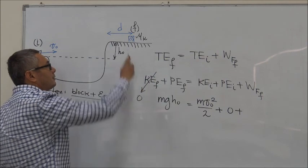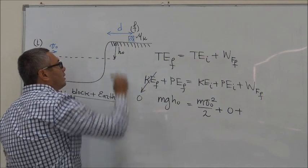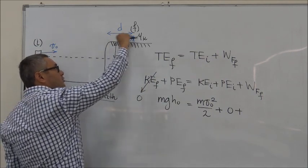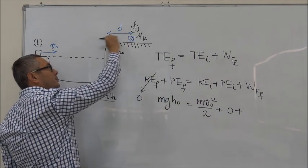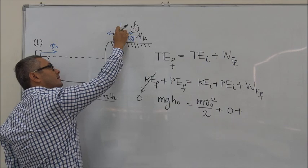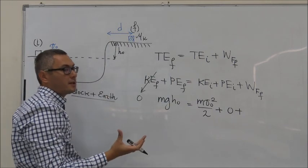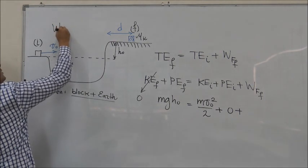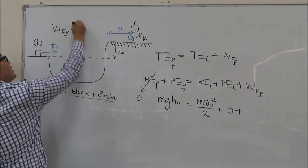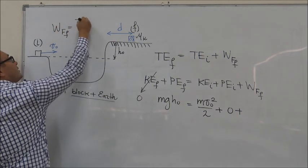Now let's look at the block here. When the block is traveling this way, the force of friction is acting on it in the opposite direction. In other words, this displacement is opposite to the force of friction. Therefore, the work done by the force of friction, which is equal to the force of friction dot displacement.